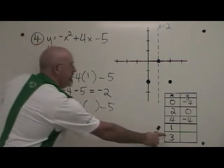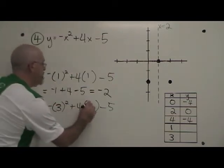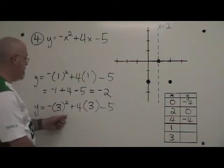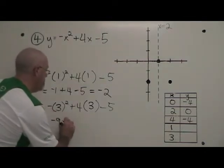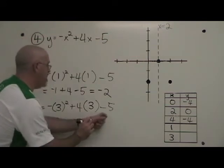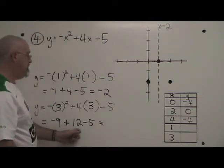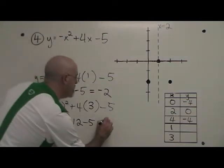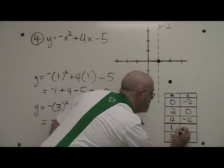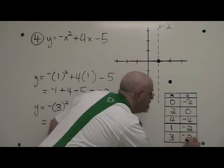Now I'm going to plug 3 into the equation. The 3 goes into the position of both x's. 3 squared is 9, so I have negative 9. 4 times 3 is 12, so it's plus 12 and then the minus 5. Negative 9 plus 12 is 3, and 3 minus 5 is also negative 2. So if x is 1, y is negative 2, and if x is 3, y is negative 2 into my table of values.